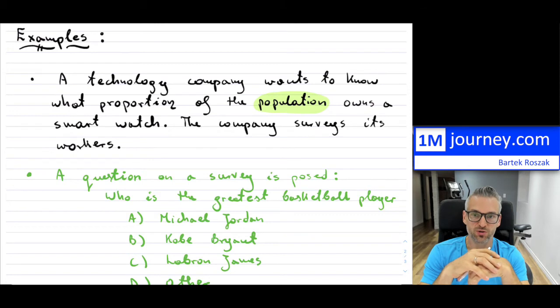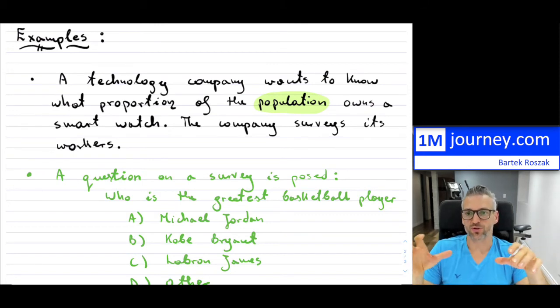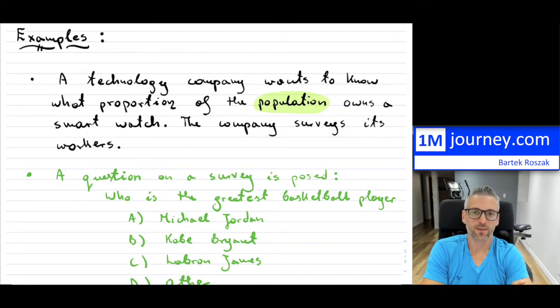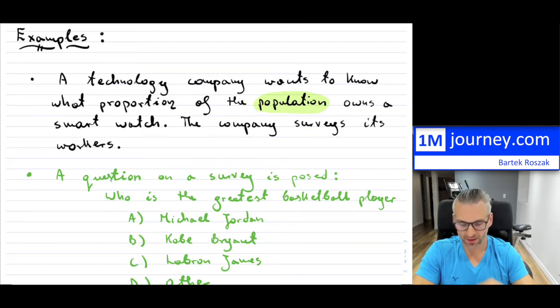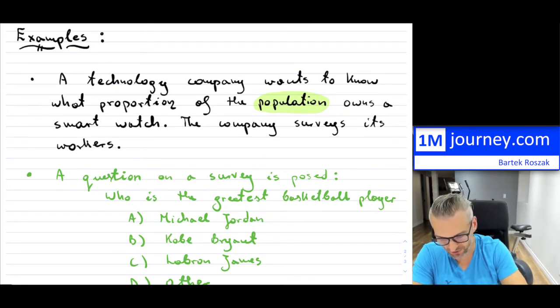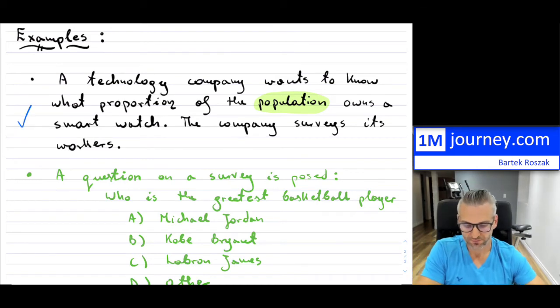Now, if you wanted to know within the members of your own company, how many people have a smartwatch, then that's different. But if you want it over overall population, then you have to be careful how you would create that survey and where you would collect that data from. So this would have a sampling bias for sure.